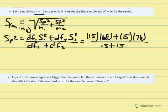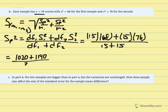Calculating: 15 times 68 equals 1020, and 15 times 76 equals 1140. That's over 15 plus 15, which is 30. So 1020 plus 1140 divided by 30 equals 72. Our pooled variance is again 72.